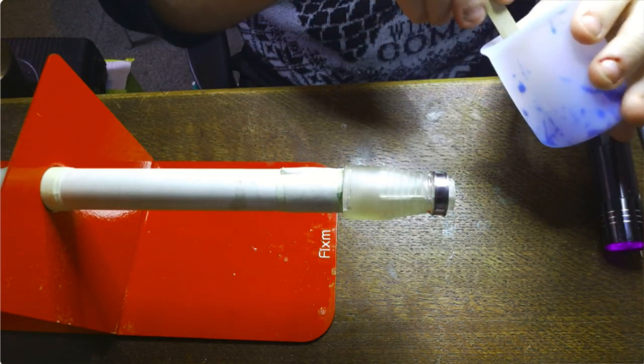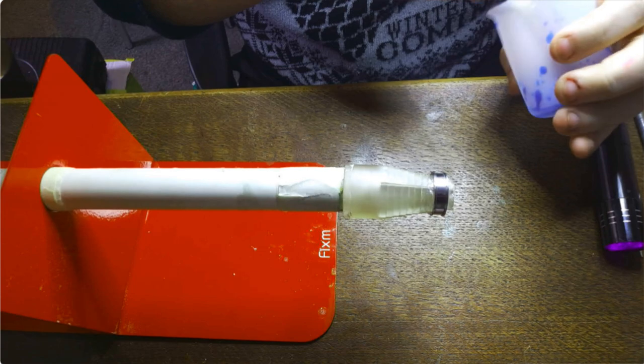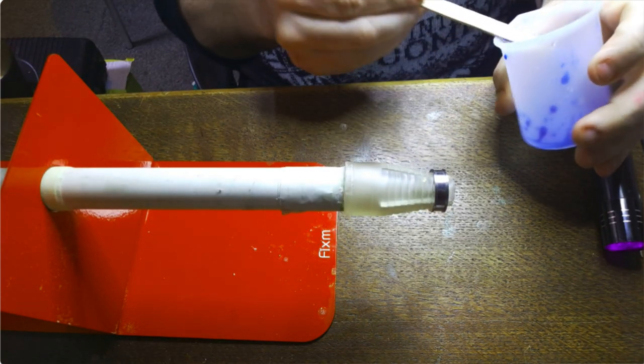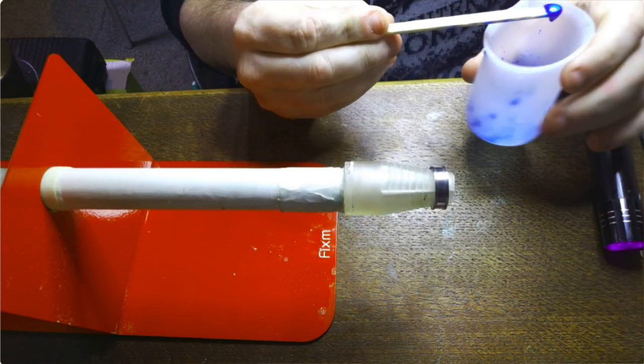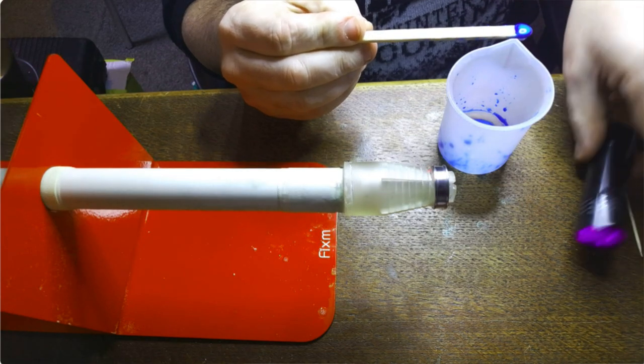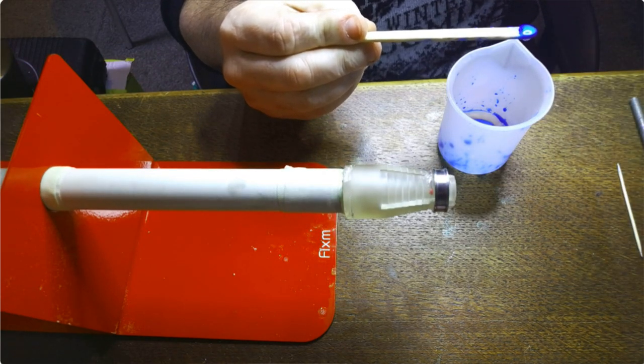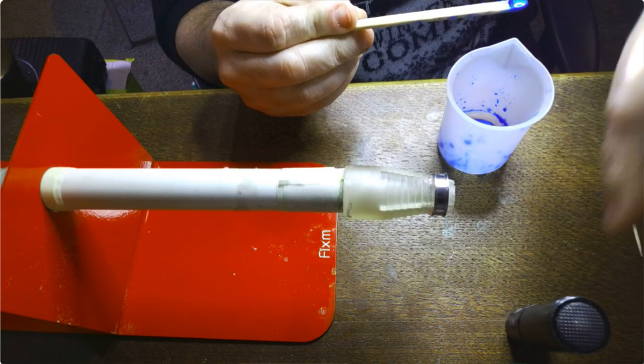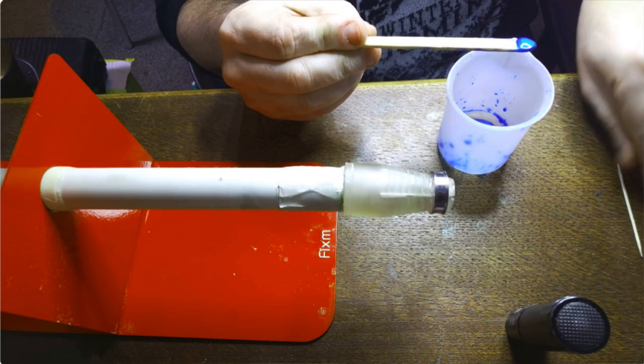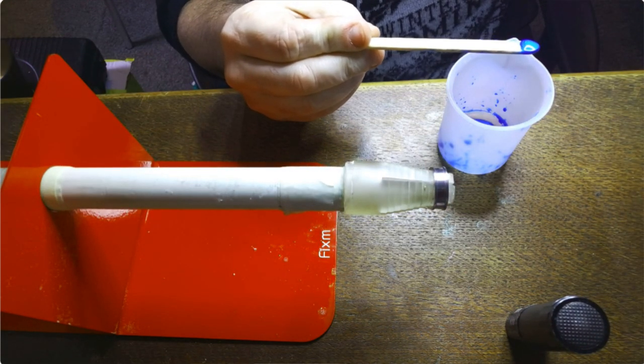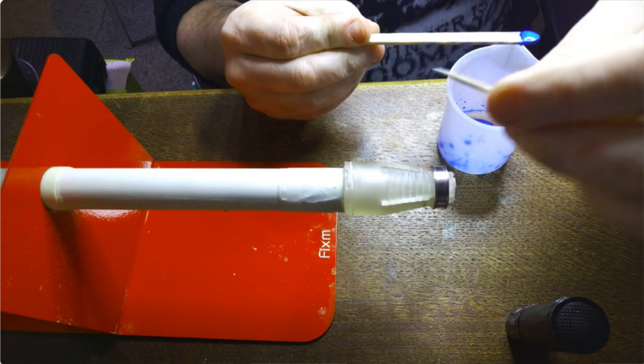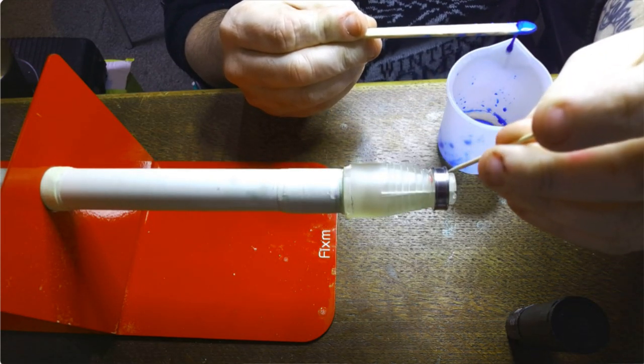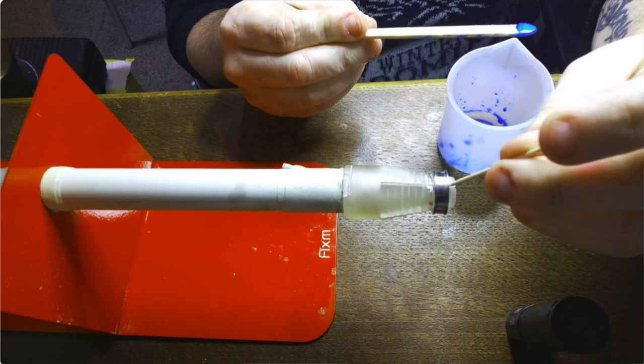This is a UV resin, so I've only mixed a little bit because you don't need a lot. And I've got my UV torch on standby and my little toothpick which I'm going to use to apply inside the ring.